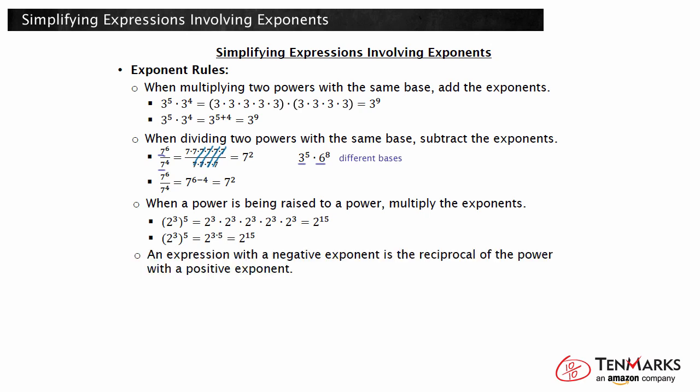An expression with a negative exponent is the reciprocal of the power with a positive exponent. For example, take the expression 3 squared divided by 3 to the seventh. The powers are divided, so you would subtract the exponents, giving you 3 to the negative fifth. Expanding the original expression: 3 squared divided by 3 to the seventh equals 3 times 3 over 3 times itself 7 times. Two of the 3's cancel out, leaving 1 as the numerator and 3 times itself 5 times as the denominator. So this can be written as 1 over 3 to the fifth. This is what the negative exponent means — 3 to the negative fifth can be written as 1 over 3 to the positive fifth. Notice that when it moves to the bottom of the fraction, the exponent changes to a positive value.